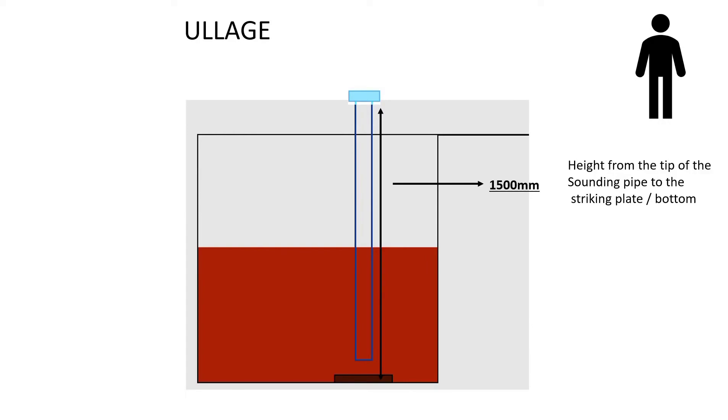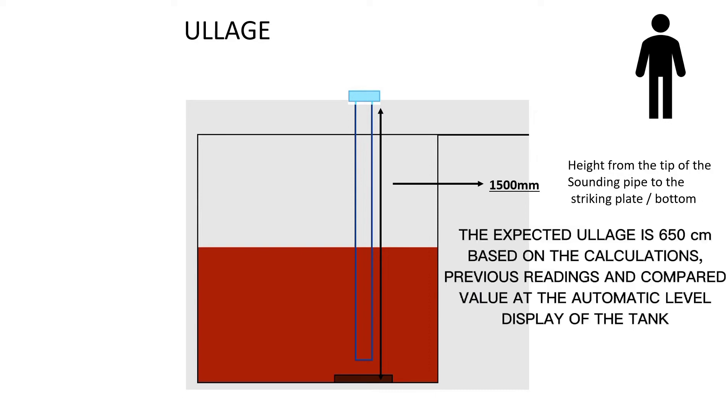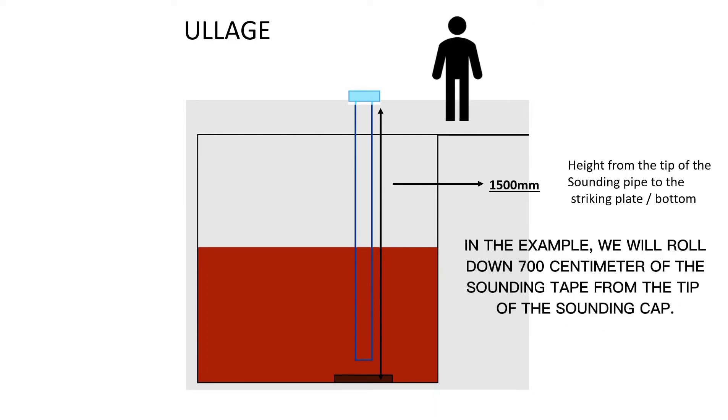Ullage. Here we have a tank filled with heavy fuel oil. The distance from the tip of the sounding pipe to the striking plate is 1500 cm. The expected ullage is 650 cm, based on the calculations, previous readings, and compared value at the automatic level display of the tank.